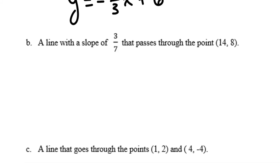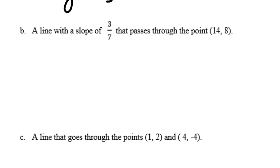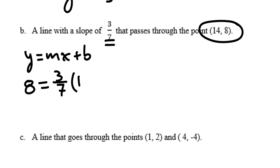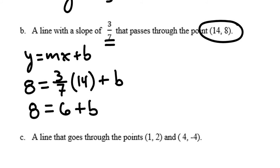Part B says: a line with a slope of 3 sevenths that passes through the point (14, 8). I have the slope, but I need to figure out the y-intercept. I write the generic slope-intercept form y equals mx plus b and plug in what I know: y is 8, slope is 3 sevenths, and x is 14. So 8 equals 3 sevenths times 14 plus b. Since 14 divided by 7 is 2, this becomes 8 equals 6 plus b. Taking away 6 from each side, my y-intercept b is 2.